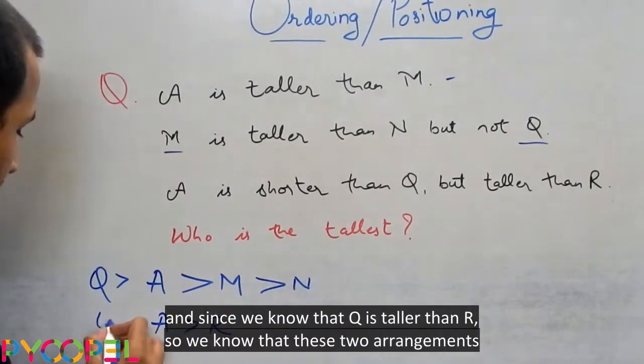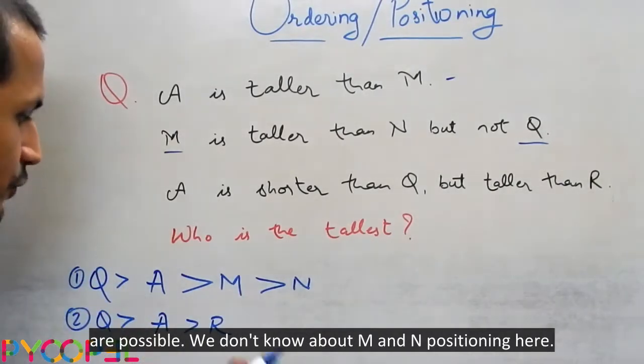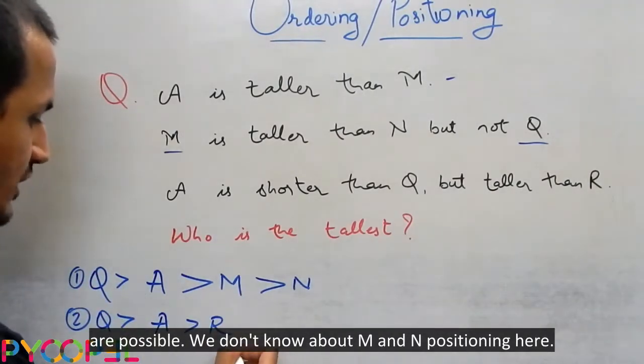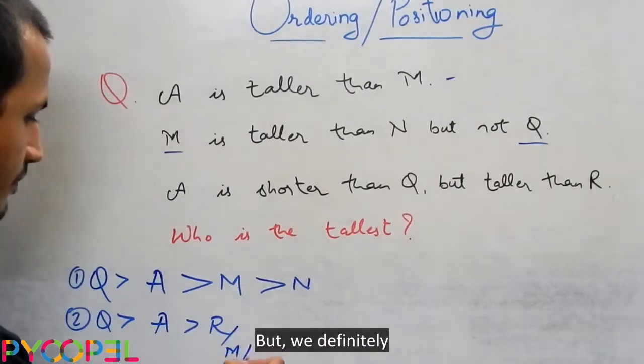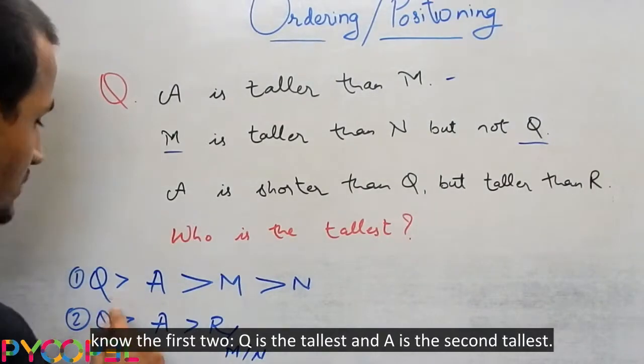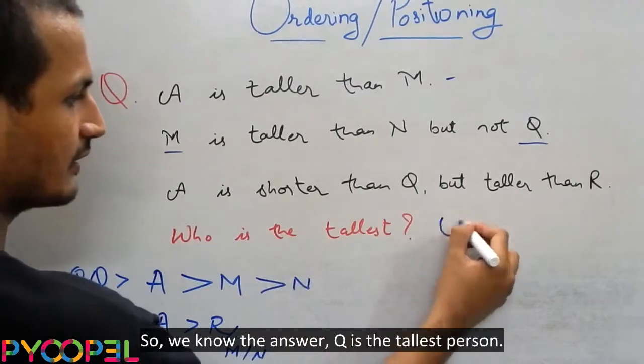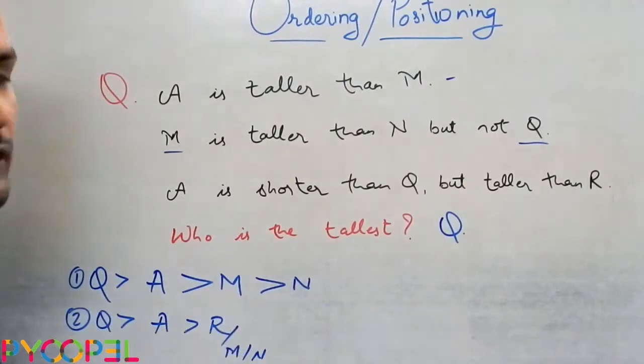And since we know that Q is taller than A and A is taller to R, we know that these two arrangements are possible. We don't know about M and N positioning here, but we definitely know the first two. Q is the tallest, A is the second tallest. So we know the answer. Q is the tallest person.